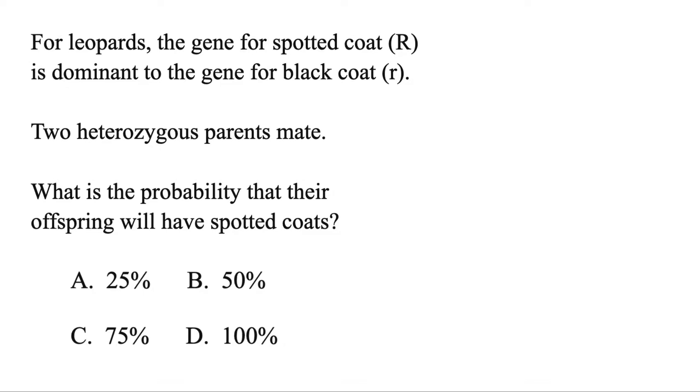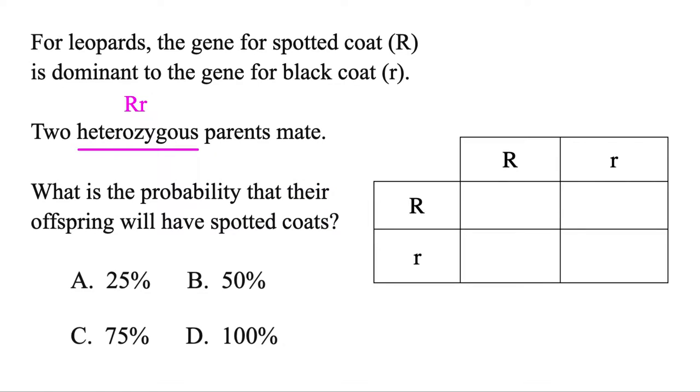When you're given a genetics problem, you'll always want to find out about the parents first. Here we have heterozygous parents. That just means a combination of one capital letter, one lowercase. And then you want to make a Punnett square. You'll just put one of the parents across the top, and then both of them have that trait. So the other one, same thing there. Then you're going to combine them to see what each of their four kids looks like. But you're just going to combine the letters. So big R, big R right there.